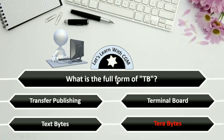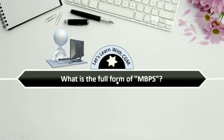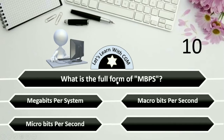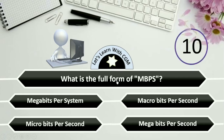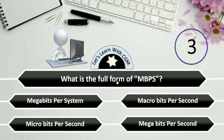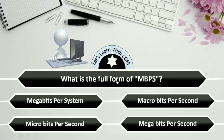What is the full form of MBPS? Options are Megabits per System, Macrobits per Second, Microbits per Second, or Megabits per Second. The correct answer is Megabits per Second.